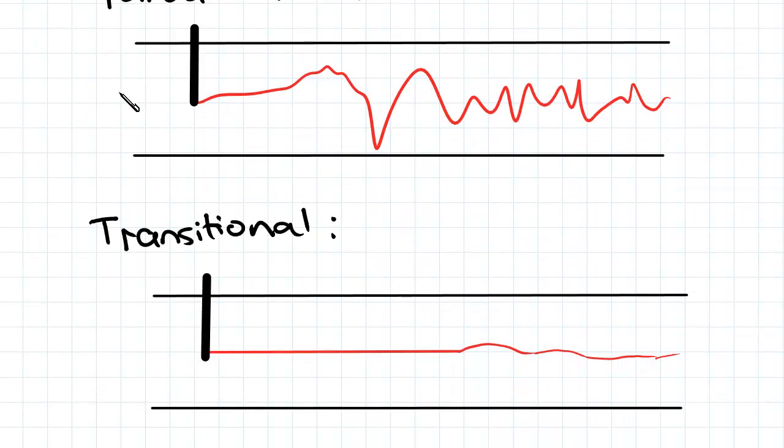And obviously in between the two is transitional which is Re greater than 2100 and less than 4000.